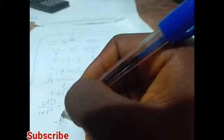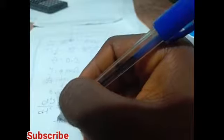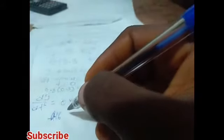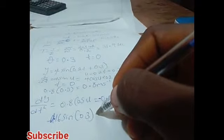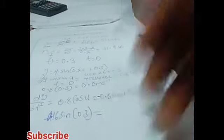Minus 0.16 sin u which happens to be 0.2t plus 0.3. So our answer is minus 0.16 sin u.